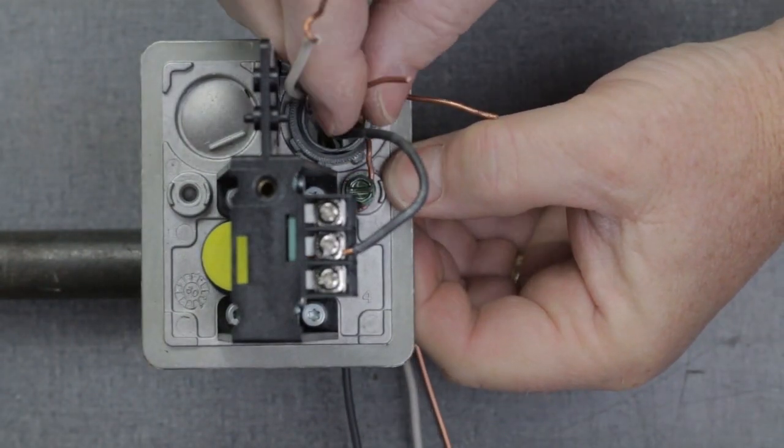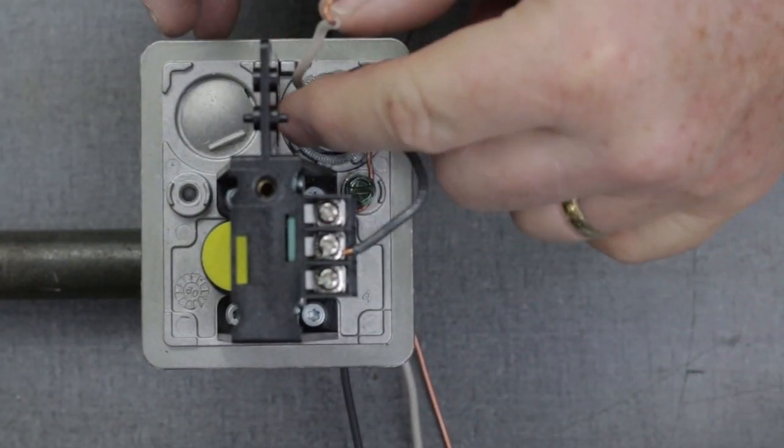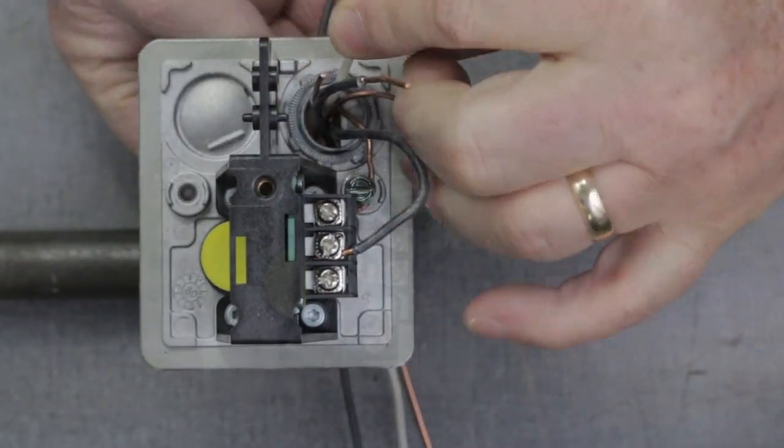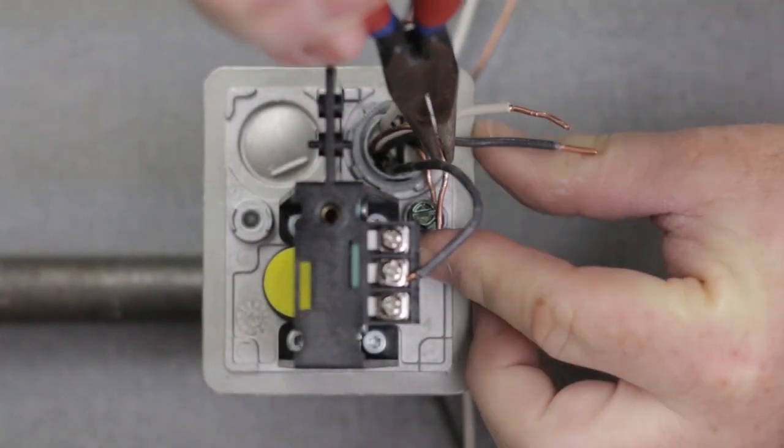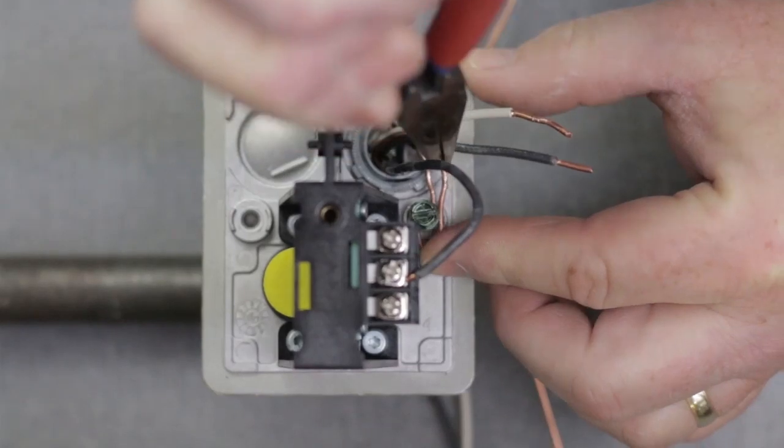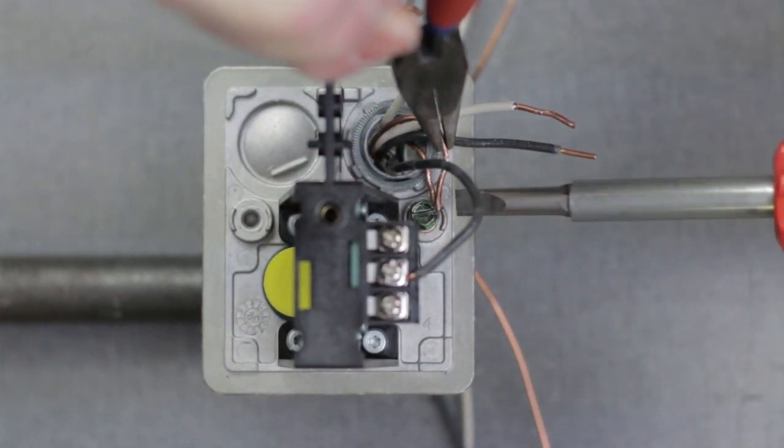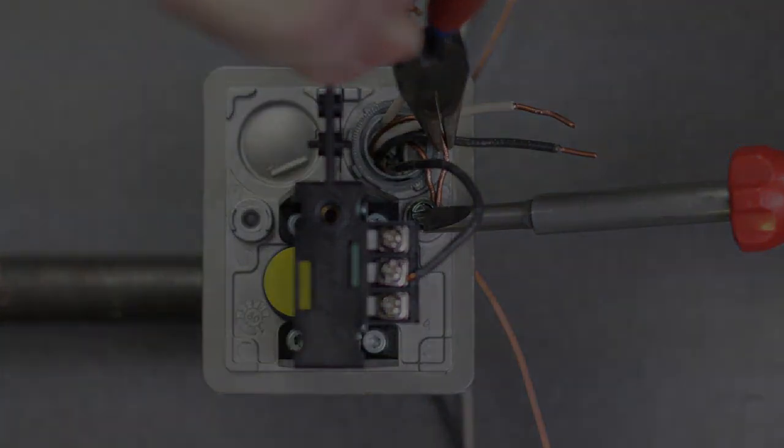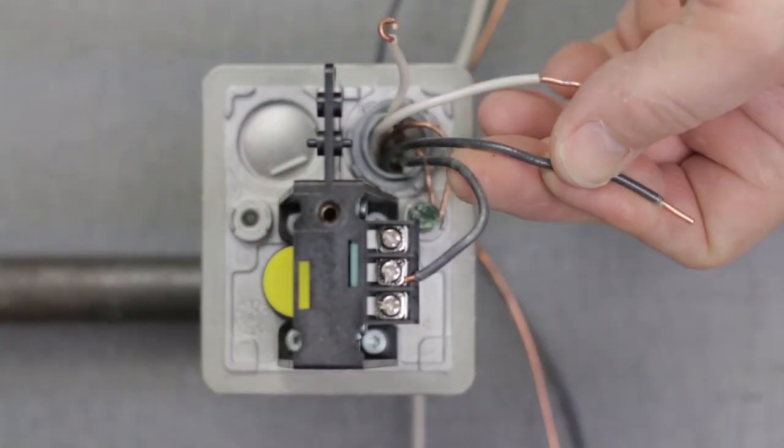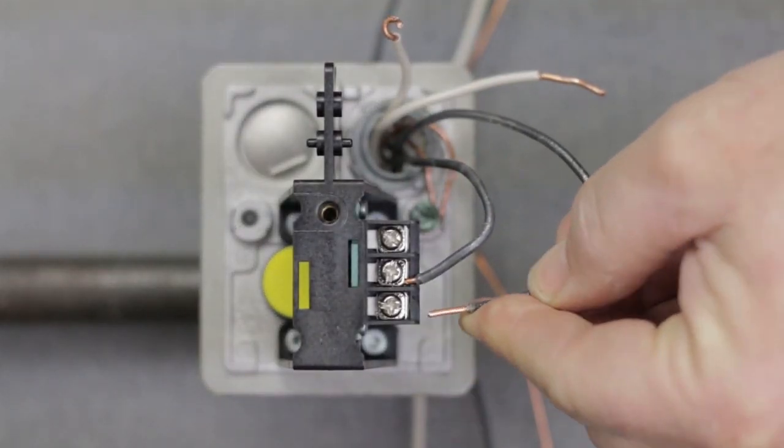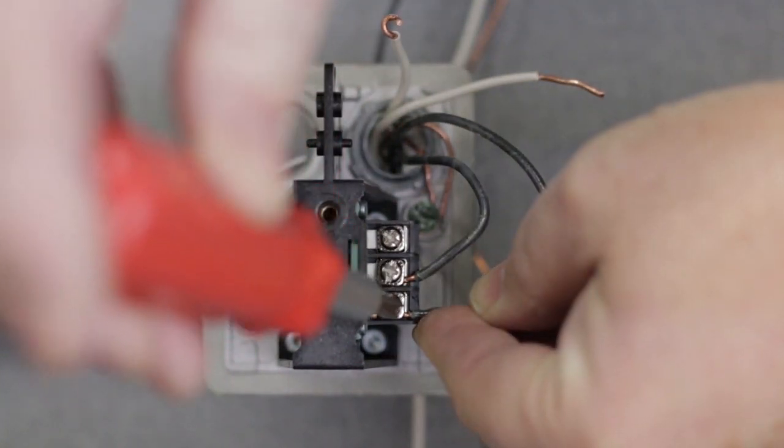Pull another set of wires for the bell into the pressure switch housing. Connect the other ground wire to the ground screw on the pressure switch. Connect the black wire for the bell to the common terminal of the PS10.